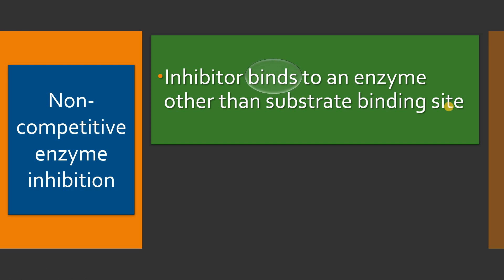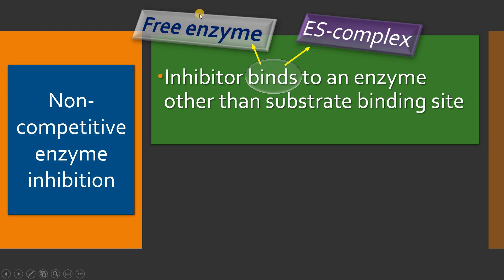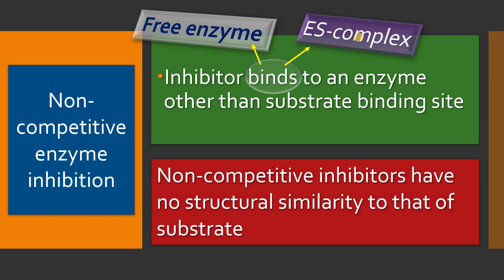This binding could be to the pre-enzyme itself, or even to the enzyme-substrate complex. Whereas in competitive inhibition, the inhibitor binds to the active site. In non-competitive inhibition, the inhibitor binds to a site other than the active site — either to the pre-enzyme or after enzyme-substrate complex formation. Unlike competitive inhibitors, non-competitive inhibitors are not structural analogues of the substrate.